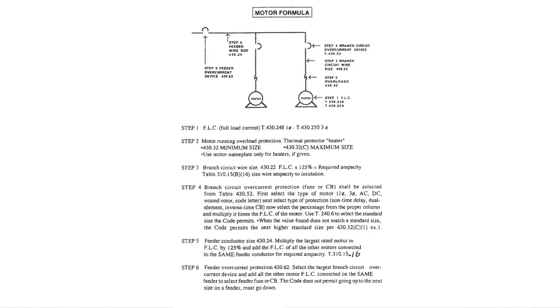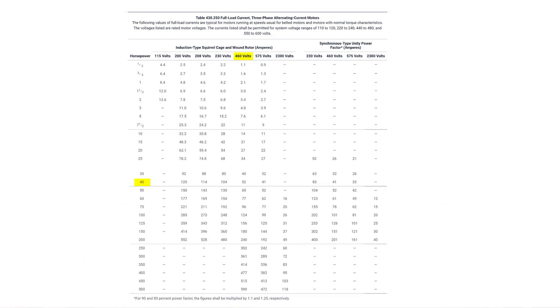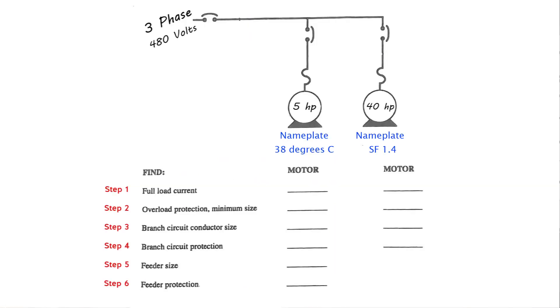So what is step number one in our six step format? Step number one, we're dealing with 480 volt three-phase. We're looking at the 430.250 table. What is the horsepower at 5 horsepower? What's the amp capacity, the full load current? 7.6 amps. And for a 40 horsepower, the full load current is 52 amps. That's step number one. That's not hard, right? That's just looking at a table, picking information off of the table.